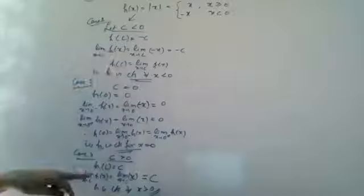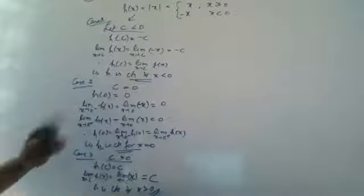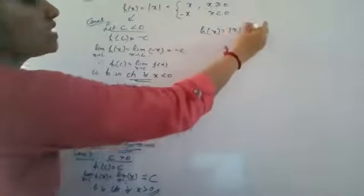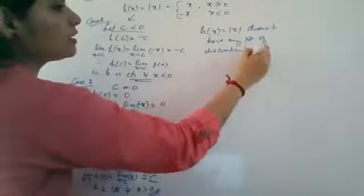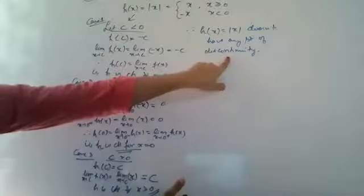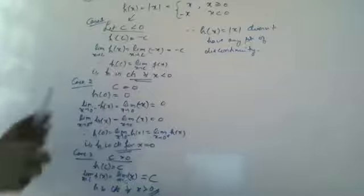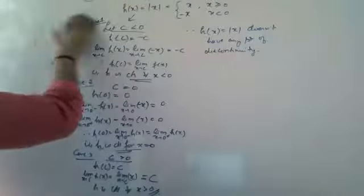So for all three cases, there is no point of discontinuity. Therefore h of x equals mod x does not have any point of discontinuity — it is continuous everywhere, for x less than 0, equal to 0, and greater than 0. Now we go for the second part, g of x equals mod of x plus 1, where the key point shifts from 0 to minus 1.